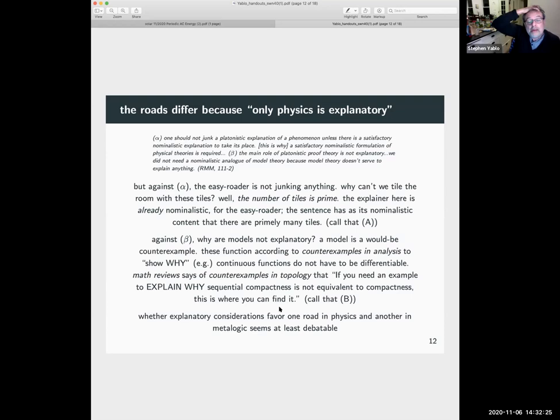Why are models not explanatory? So you might think, look, a model is a would-be counterexample to the validity of an argument. So I went to the source on counterexamples in mathematics. There's of course these famous books, counterexamples in analysis, counterexamples in topology. Counterexamples in analysis says that we use counterexamples to quote unquote show why, which the word why there suggests that there's something explanatory going on. Show why, for instance, continuous functions don't have to be differentiable. Math Reviews says of the book counterexamples in topology that if you need an example to explain why sequential compactness is not equivalent to compactness, this is where you can find it.